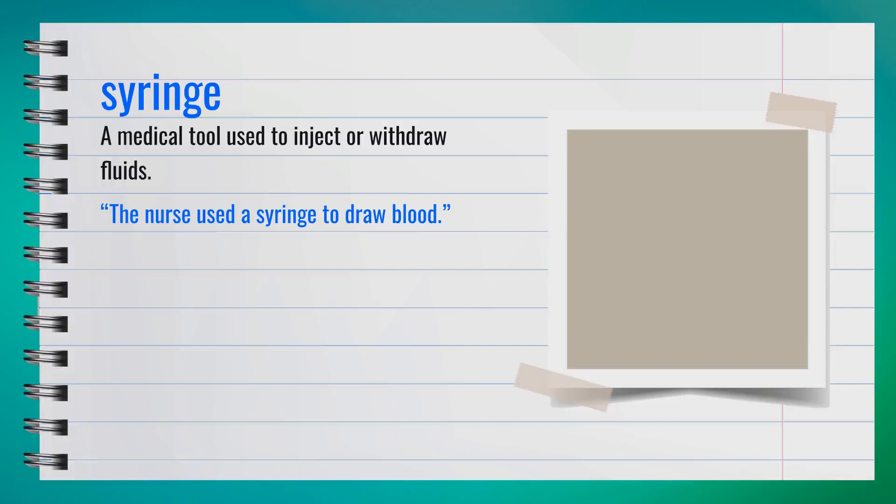The word syringe is a noun, spelled S-Y-R-I-N-G-E. It is a medical tool used to inject or withdraw fluids. A synonym for syringe is injector. For example, the nurse used a syringe to draw blood. In summary, a syringe is a device used for injections or withdrawals in medical contexts.